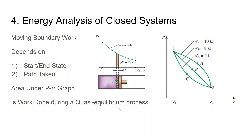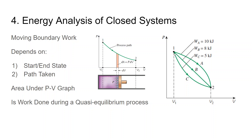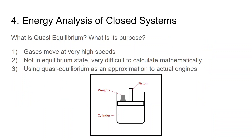You can find the area under the PV diagram in a quasi-equilibrium process — that area represents the work done. For example, area under curve C is 5 kJ, area under B is 8 kJ, and area under A is 10 kJ. The larger the area, the higher the amount of work.